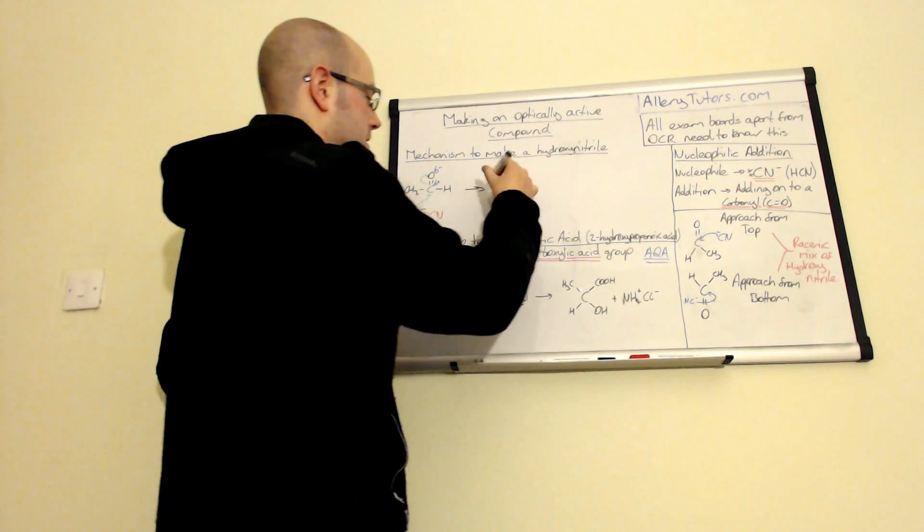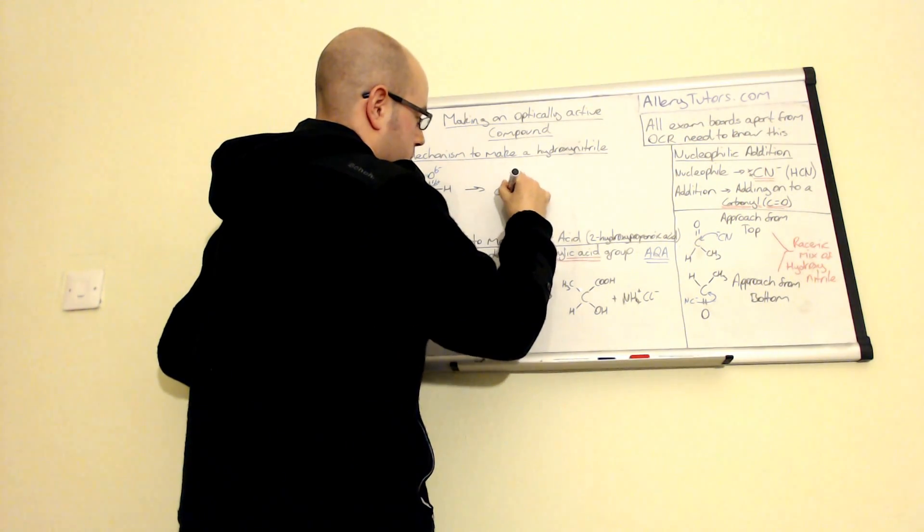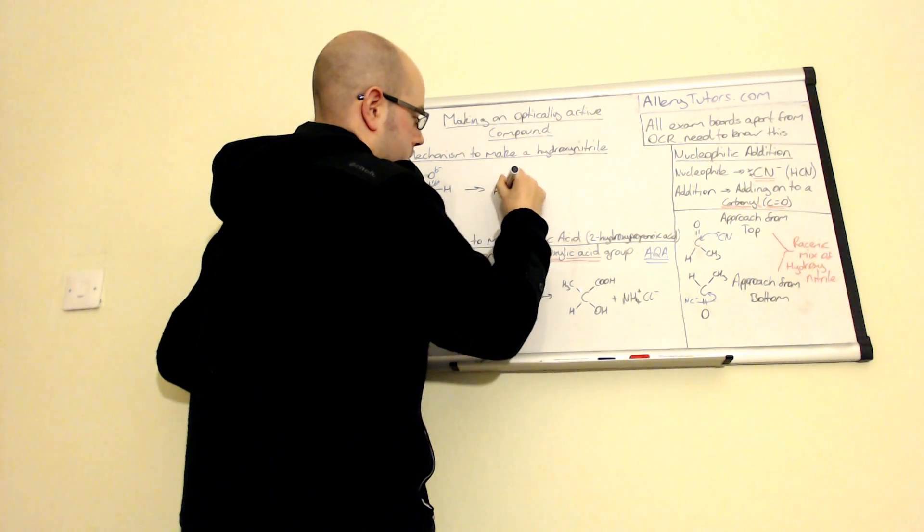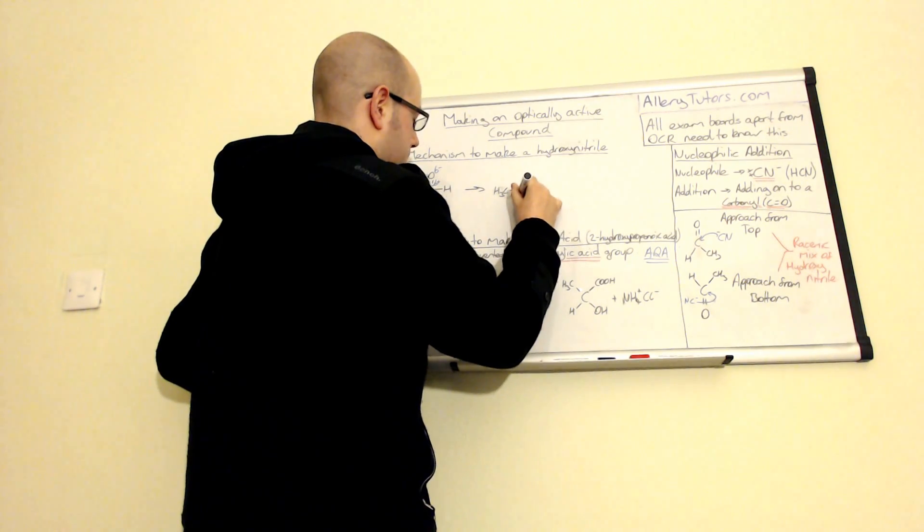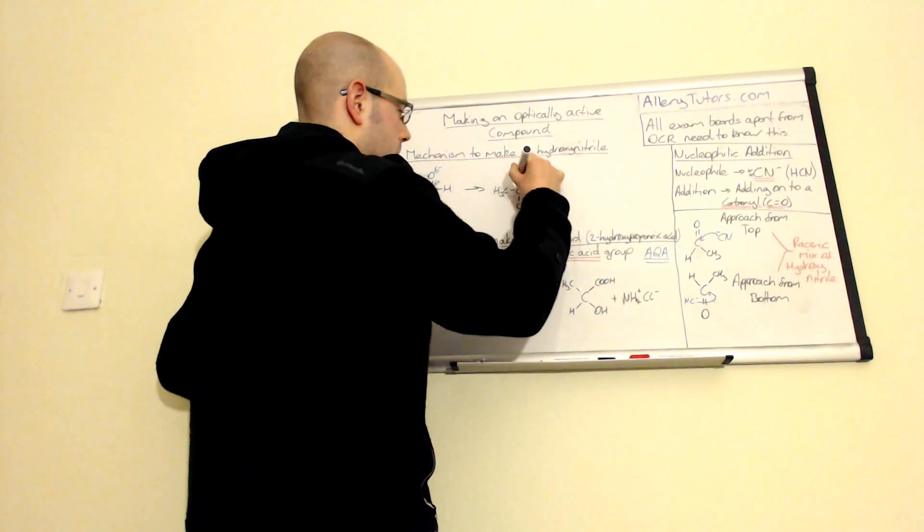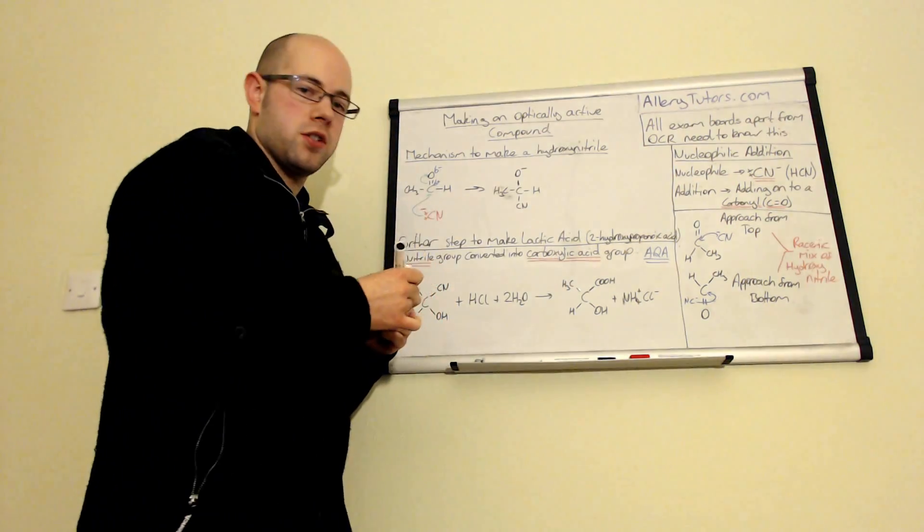And we actually form an intermediate stage. And our intermediate is this. So we have our CH3, and CH. We have our cyanide which we have just added onto at the bottom. And we have an O minus with a negative charge on the top.